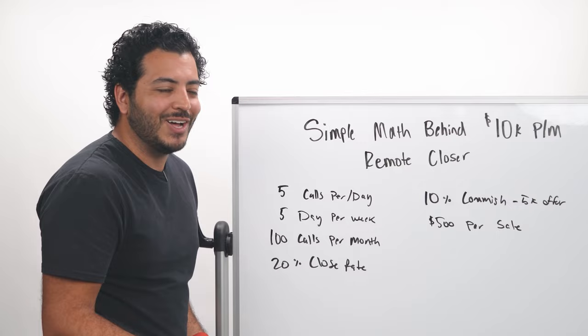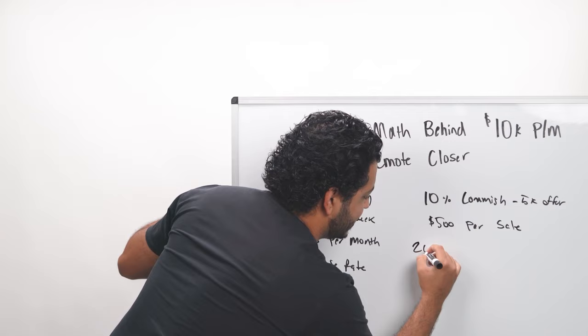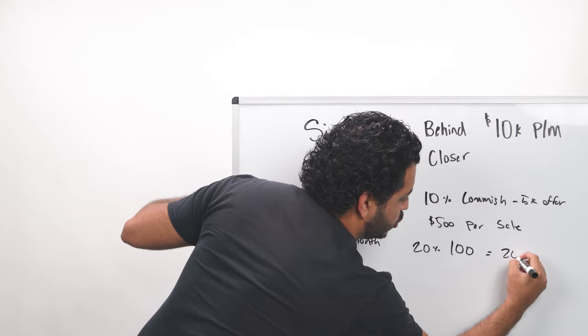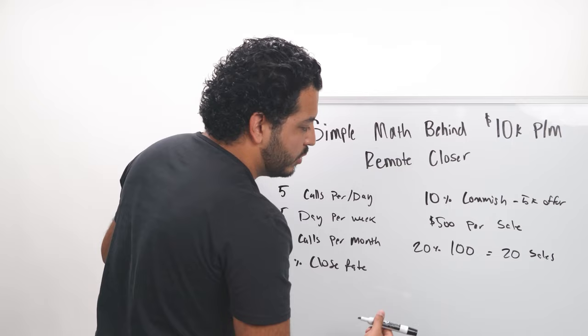So with all these numbers considered, we're going to break it down here. So again, let's say you're closing at 20%, and you're going to close 20% of the hundred calls. 20% of the hundred calls that you took is going to equal out to 20 sales. And then again, what we talked about, you're getting about $500 per sale.